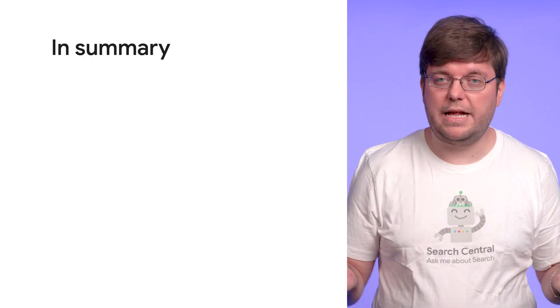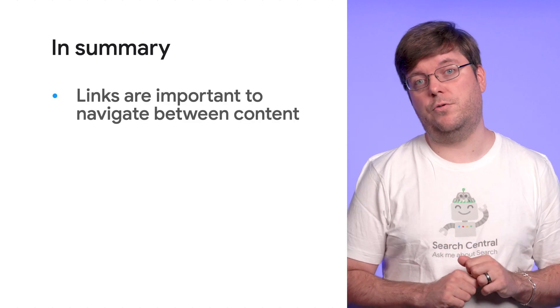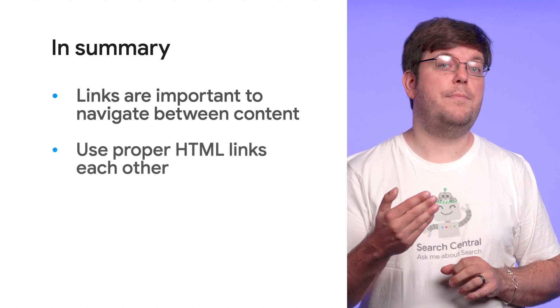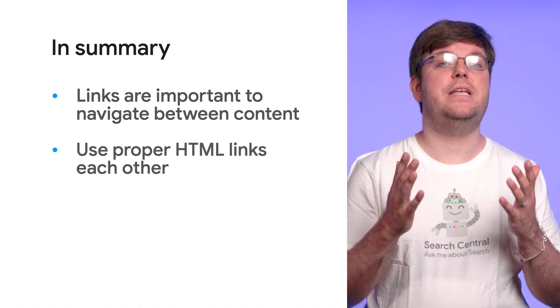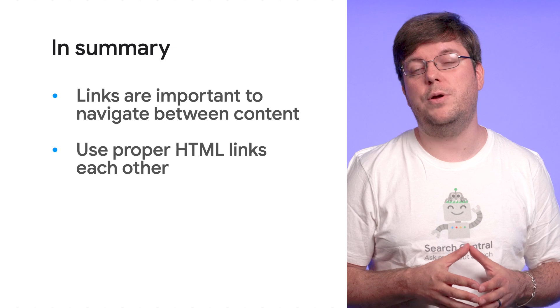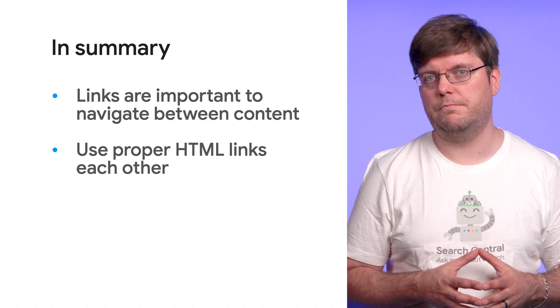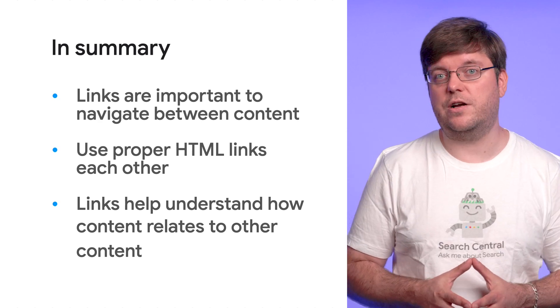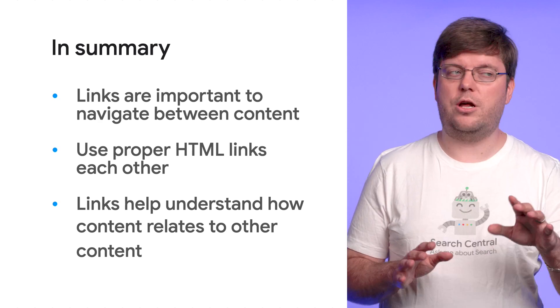Let's summarize what we've talked about today. Links are important for users and bots to find related content on a page. Use the appropriate HTML to make links and give them meaningful anchor text to help users quickly find the right link for where they want to go. Also, links help users and bots to understand your content structure, so use them reasonably — not too little, not too many. Leave us a comment if you want more technical content on Google Search Central and what topics we should cover in the future. Thanks for watching this video, and see you soon!